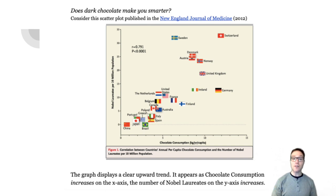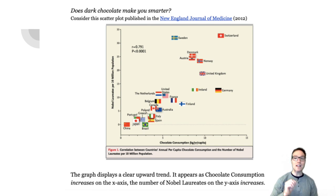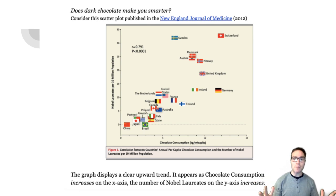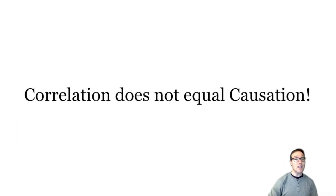So this was a significant result. And as we'll learn soon, the r-value on this graph, which is .791, tells us there's a fairly strong relationship between these two variables. So what's really going on here? Are we to conclude that a country's chocolate consumption is increasing the intelligence of its population? The answer is, we don't know.